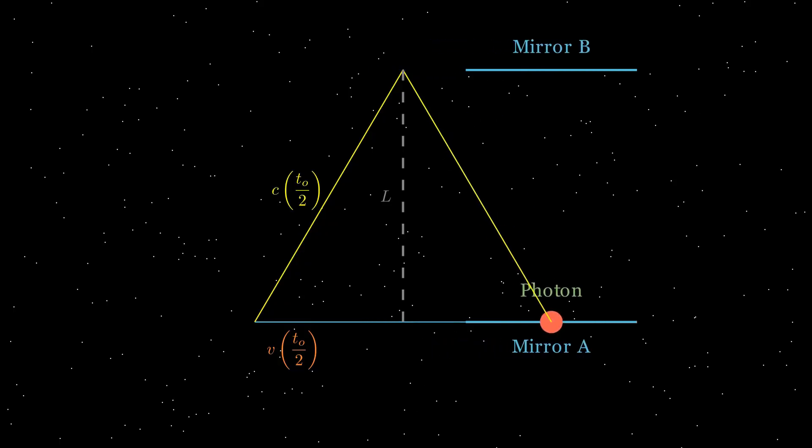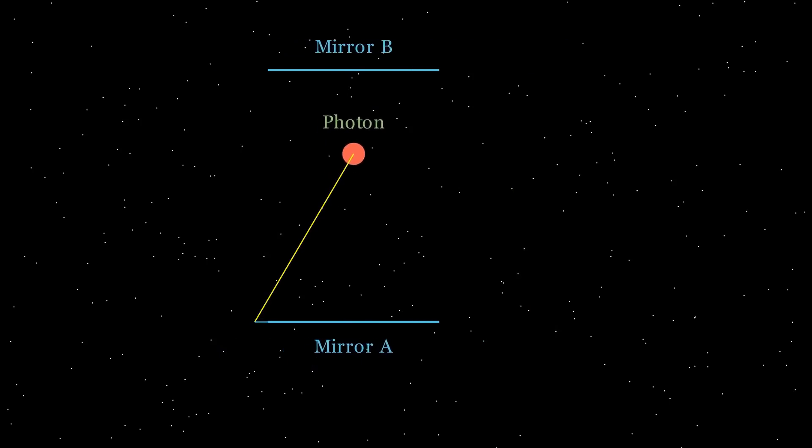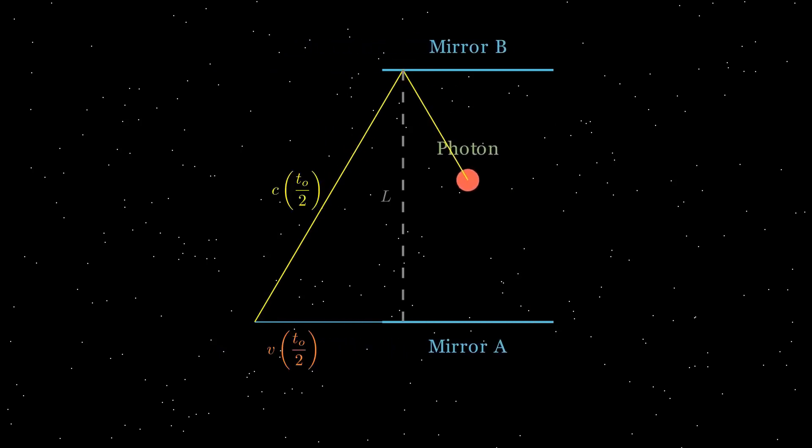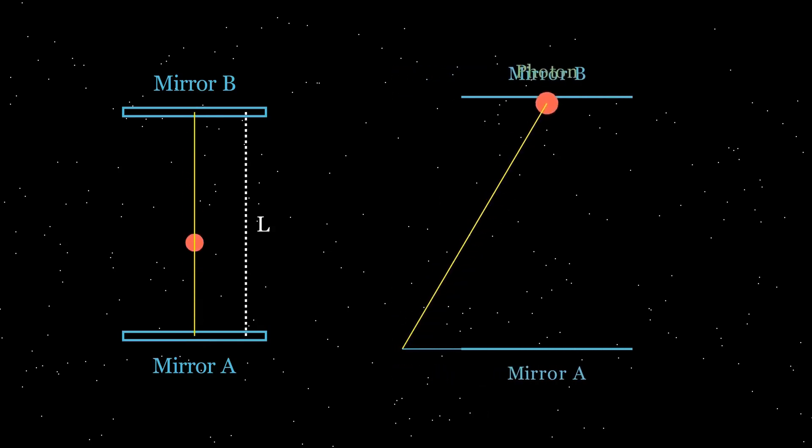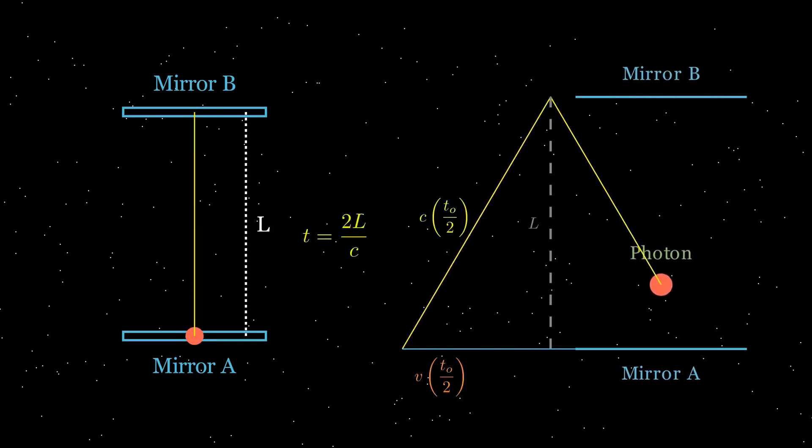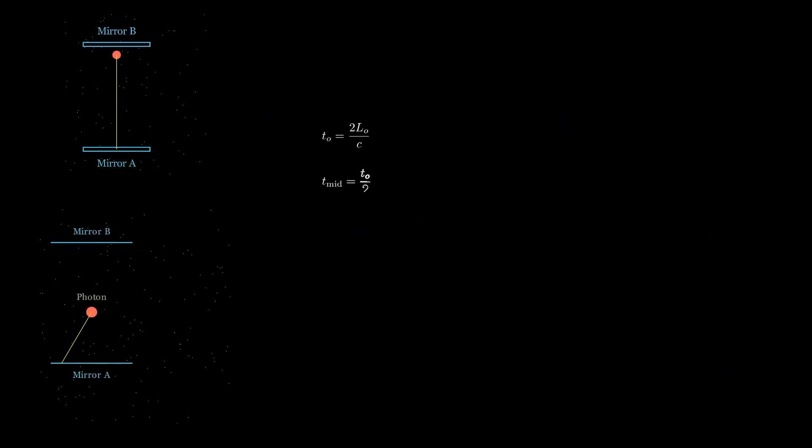In both cases, the photon moves along a longer path than it would inside the stationary frame of the ship. Despite these diagonal paths, the speed of light remains constant in all frames of reference. This fundamental postulate of Einstein's special relativity leads to a striking conclusion.